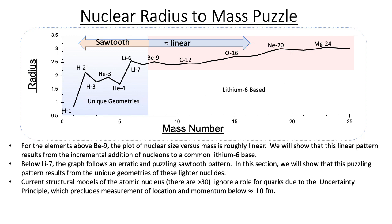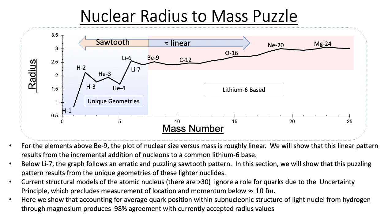Current structural models of the atomic nucleus — and there are more than 30 — ignore a role for quarks due to the uncertainty principle, which precludes measurement of location and momentum at the scale of the atomic nucleus. Here we will show that accounting for average quark position within the subnucleonic structure of light nuclei from hydrogen through magnesium produces 98% agreement with currently accepted radius values.